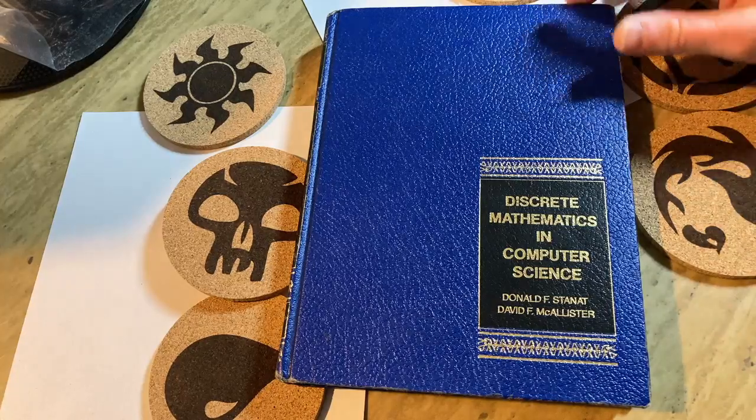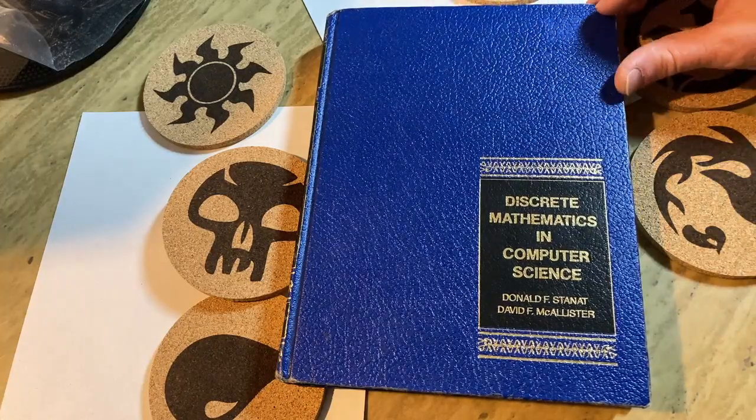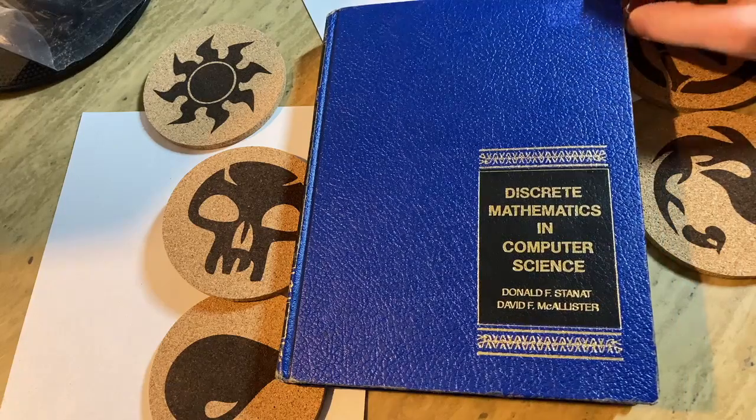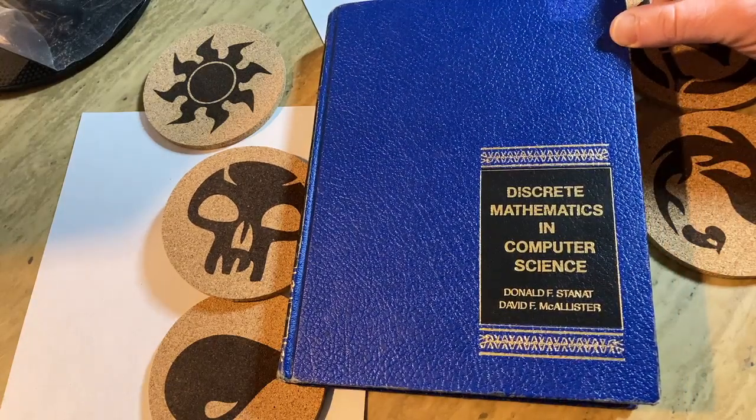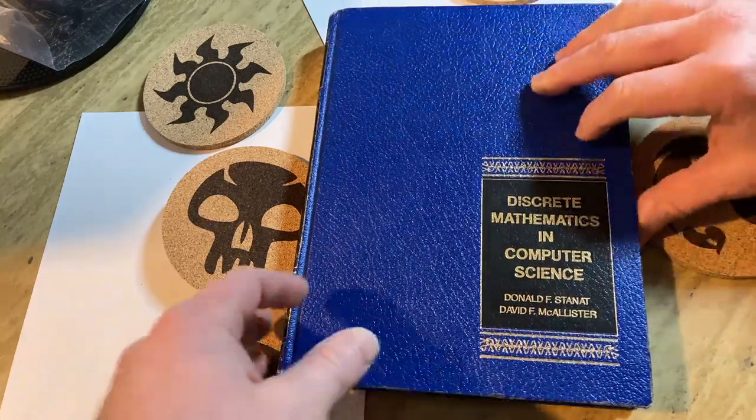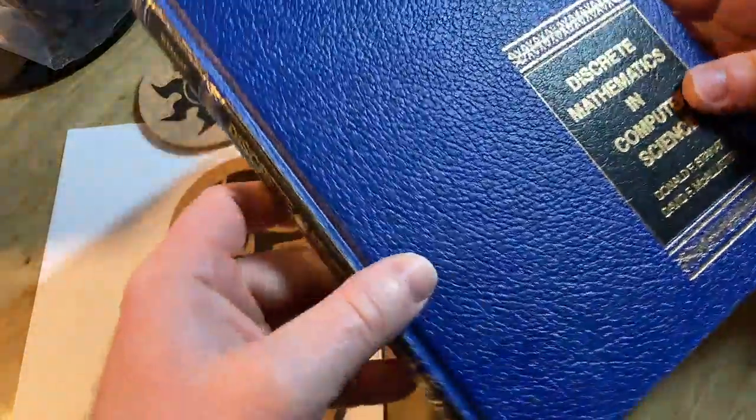Hello. In this video, we're going to look at an older book on discrete math in computer science. It's called Discrete Mathematics in Computer Science. It was written by Donald F. Stannat and David F. McAllister.